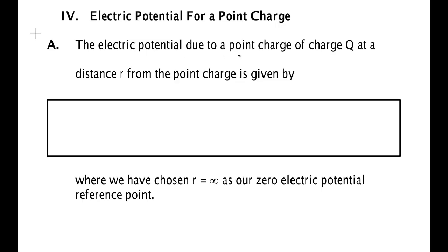The electrical potential due to a point charge of charge Q at a distance r from some point in space is given by the formula that the voltage is equal to k times the charge over the distance to the charge. This has an assumption. I didn't write a change in V. That's because I've chosen r equal to infinity as the zero electrical potential reference point.